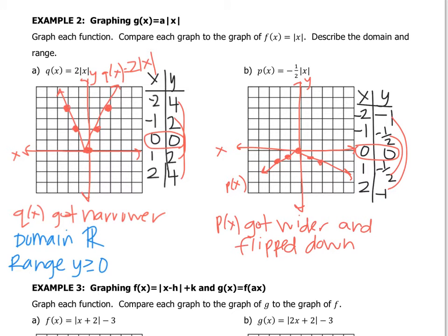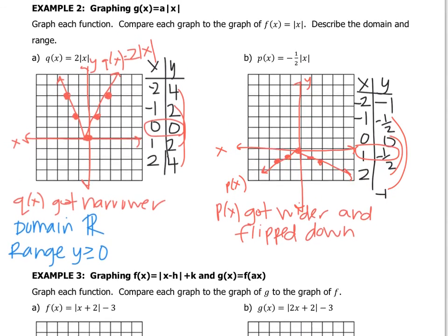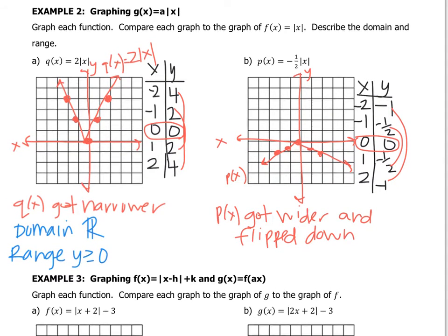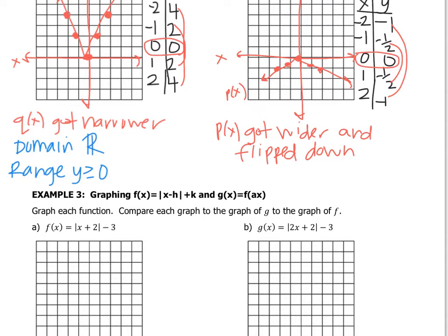The last thing is domain and range. The domain is still all real numbers. For the range, the vertex is at (0, 0) but the graph opens downward, so all the y-values are below zero — the range is y ≤ 0. There's a lot more to this worksheet and lesson, and we'll discuss the rest when we see each other in class.